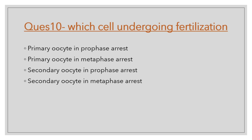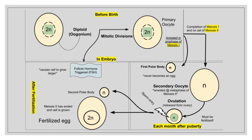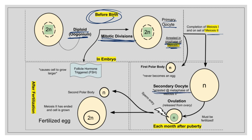Question number 10: Which cell undergoes fertilization — primary oocyte in Prophase arrest, primary oocyte in Metaphase arrest, secondary oocyte in Prophase arrest, or secondary oocyte in Metaphase arrest? The correct option is secondary oocyte in Metaphase arrest. Before birth, oogonia in diploid state converts into primary oocyte through mitotic division, arrested in Prophase I of meiosis I. After puberty, meiosis I completes, releasing the first polar body and forming the secondary oocyte. This secondary oocyte is arrested in Metaphase II, and after sperm entry it is converted into the fertilized egg, releasing the second polar body.